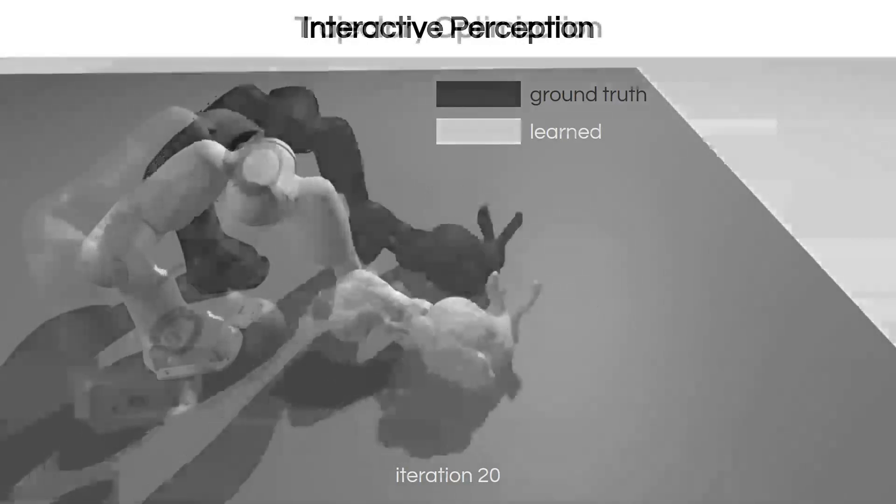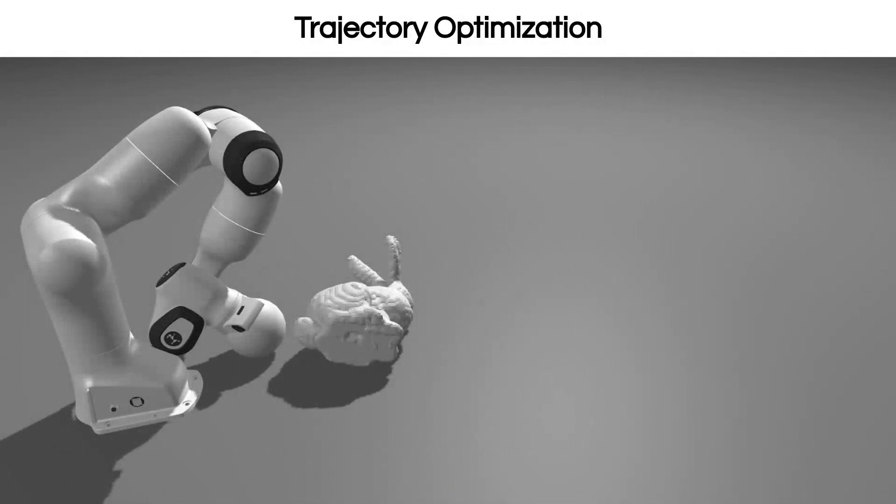For the last application, we solve a push-and-slide task using trajectory optimization. The objective is to push the Stanford bunny using a fully actuated spherical end effector. The goal positions of the end effector and the bunny are shown with white and black circular targets, respectively.